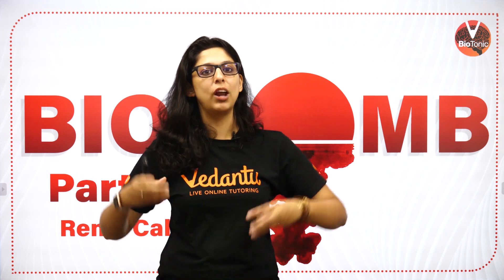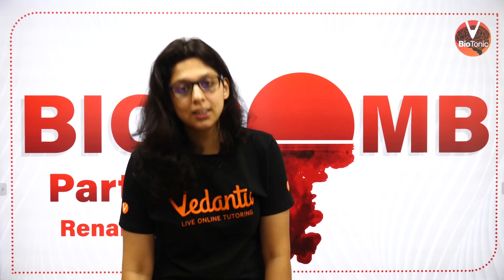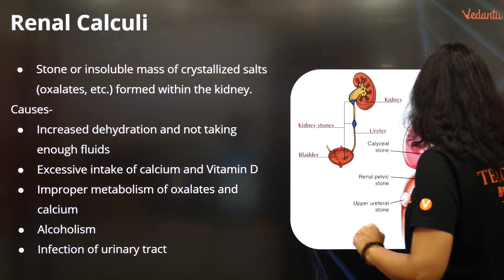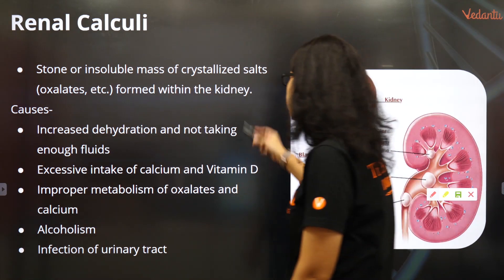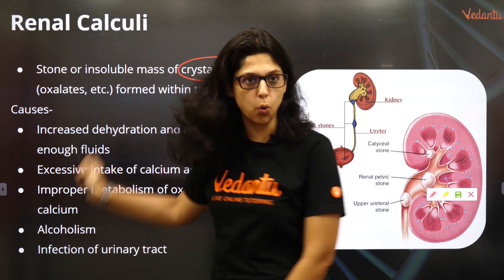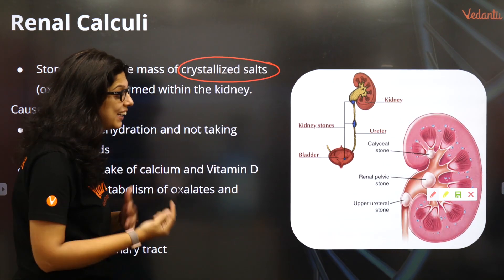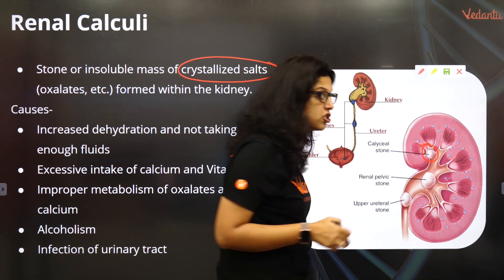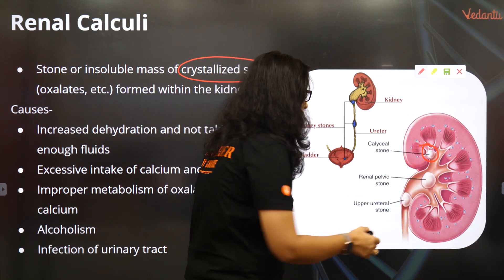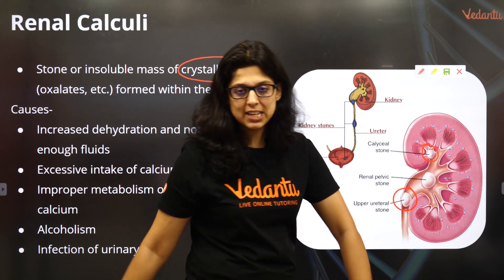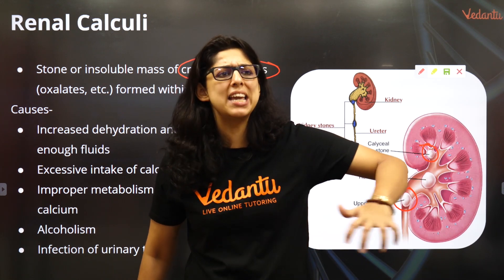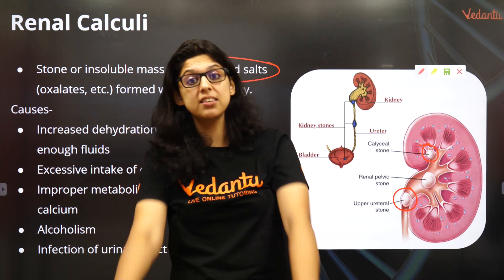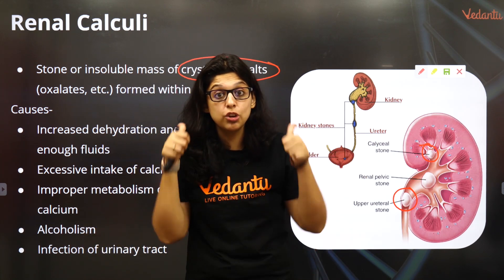Renal calculi simply means renal stones — an insoluble mass of crystallized salts deposited in the kidney. If it's in the pelvis it's known as a pelvic stone; in the major or minor calyx it's a calyceal stone. In the pelvis or in the ureter, it causes excruciating pain.